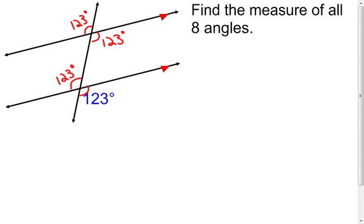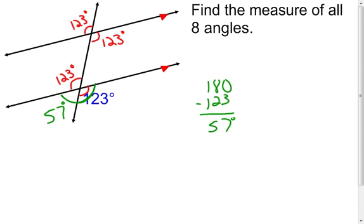The next part: I know that these two angles together are supplementary. Therefore, if one of them is 123 degrees, I subtract that from 180 and find out that's a 57 degree angle. Now using properties of parallel lines — alternate exterior angles are congruent — I use my 57 degree angle here and say there's my alternate exterior angle with it. Therefore, this one is also going to be 57 degrees.